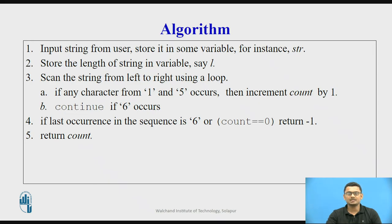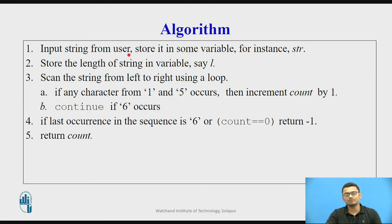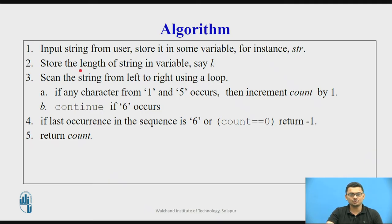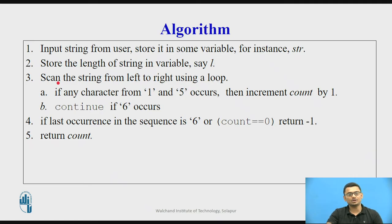Here is the algorithm to solve the problem. First, initialize your program and take an input string from the user, storing it in a variable — in this case we call it str. The sequence of dice rolls will be stored in str. We also need to store the length of the string in a variable, say L. The third step is to scan the string from left to right using a loop.